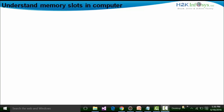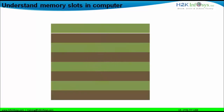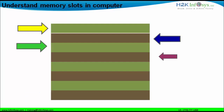We will first understand the memory slots prevalent in a computer. The memory slots would look like this. Each of the different colors you see are nothing but your memory slots. This is one particular memory slot, this is another memory slot, then we have the third, fourth, and fifth memory slot.